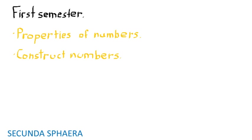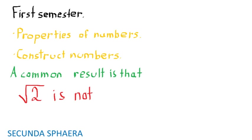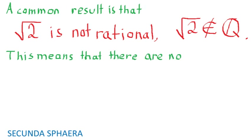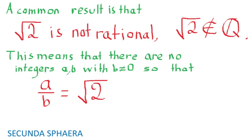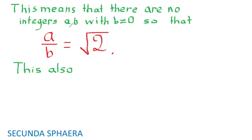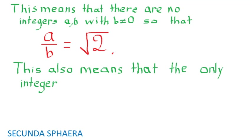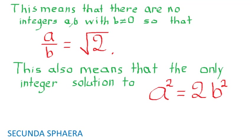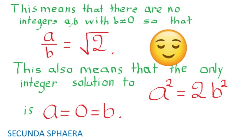Overall, during the first semester of mathematics, it is common to study the basic properties of numbers and to construct them. A common proof reviewed at this time is the proof that the square root of 2 is not a rational number. This means that there are no two integers a and b, with b different from 0, so that a divided by b equals the square root of 2. Another way to state this result is that the only integer solution to the equation a squared equals 2 times b squared is when a equals 0 equals b.